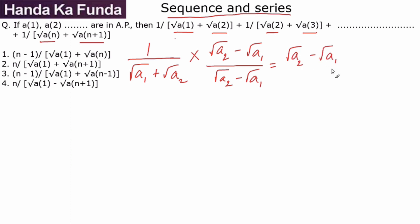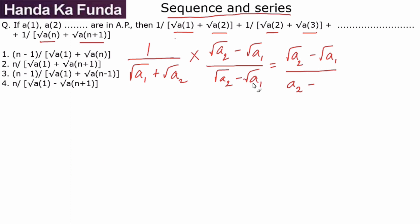In the denominator, (√a1 + √a2)(√a2 − √a1) is of the form (x + y)(x − y) = x² − y², giving us a2 − a1. The numerator becomes √a2 − √a1, divided by (a2 − a1). This makes the calculation much easier.